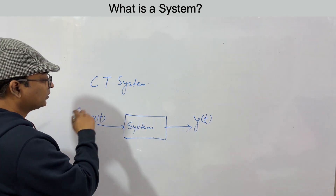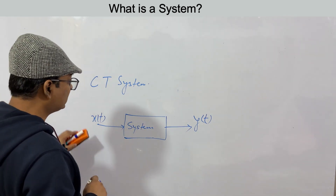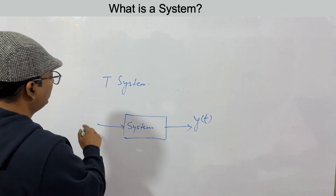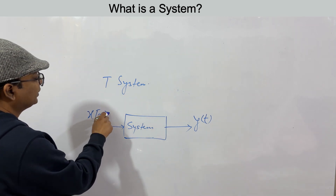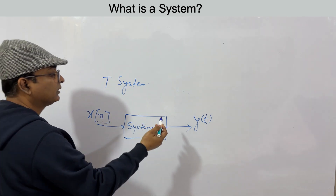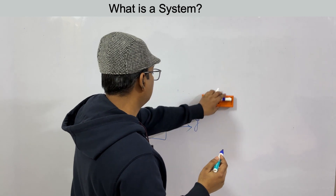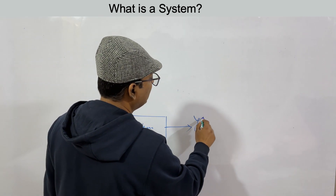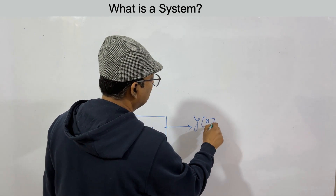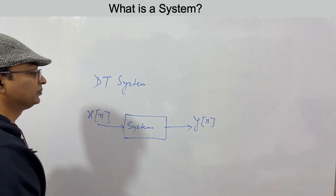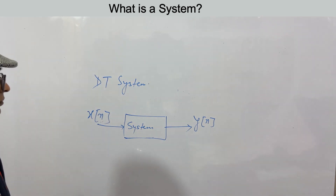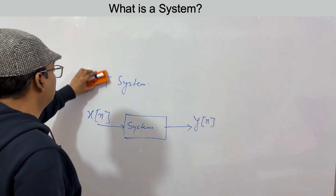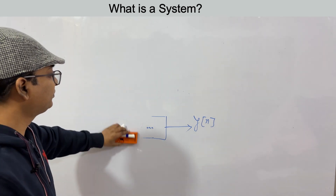If we have a system where the input is a discrete time signal and the system transforms it into a discrete time output signal, that is called a discrete time system. This is the basic definition of a system.